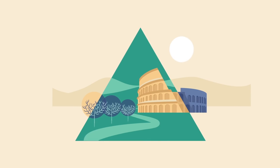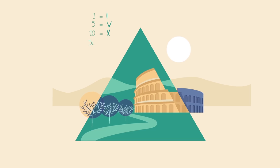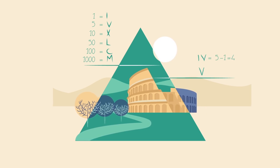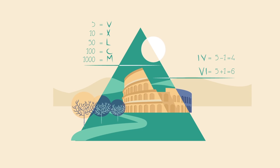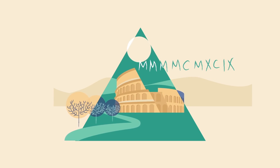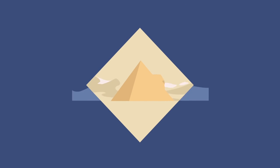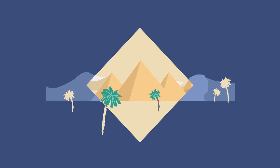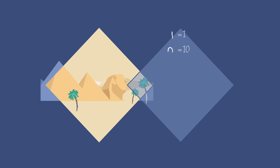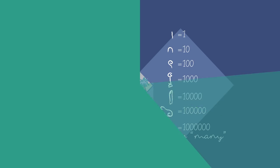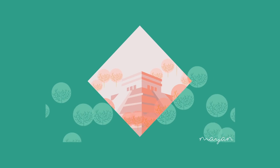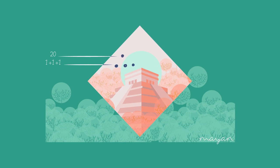Roman numerals added another twist. If a numeral appeared before one with a higher value, it would be subtracted rather than added. But even with this innovation, it was still a cumbersome method for writing large numbers. The way to a more useful and elegant system lay in something called positional notation. Previous number systems needed to draw many symbols repeatedly and invent a new symbol for each larger magnitude. But a positional system could reuse the same symbols, assigning them different values based on their position in the sequence.